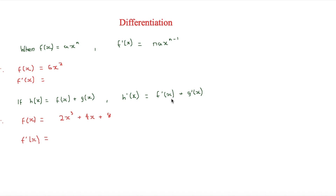It may sound slightly difficult at first, which is why we need to put it into a question. Here we have f(x) equal to 6x squared — what is the derivative? We know n equals the power, so n equals 2. We put that at the start: 2 times 6 times x, and then n minus 1 gives us 2 minus 1, which is 1. So the answer is simply 12x.